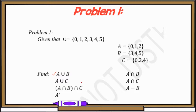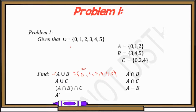We have A union B first. For A union B, all we do is combine the elements 0, 1, 2 from set A and 3, 4, 5 from set B. So for the set of A union B, we have 0, 1, 2, 3, 4, 5. Since this equals the universal set, we could simply write this as U.